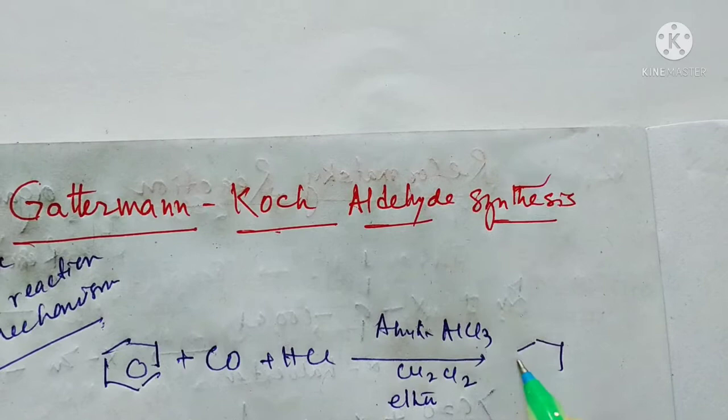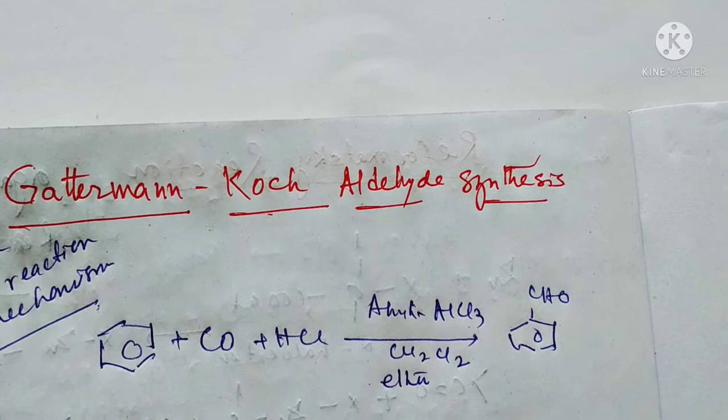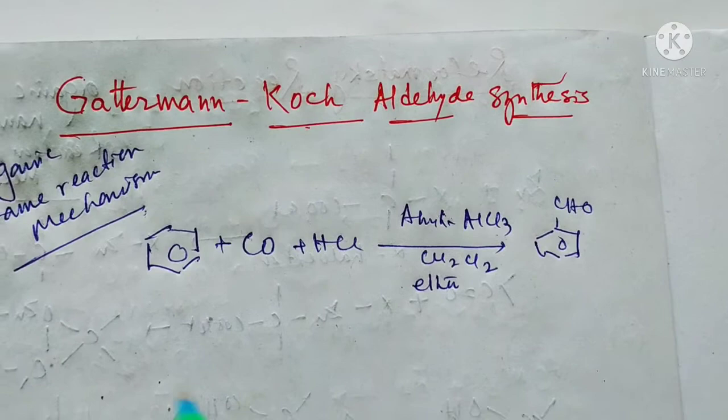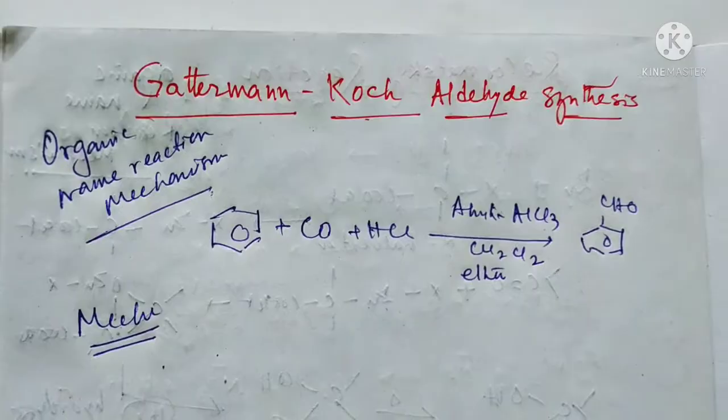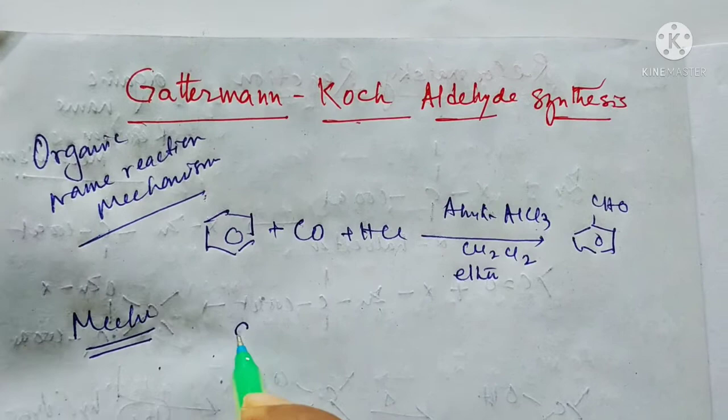This is actually the process how Gattermann-Koch aldehyde synthesis occurs. Now I am going to show you the mechanism behind this Gattermann-Koch aldehyde synthesis. First, actually, this carbon monoxide, the carbon monoxide is actually like this.